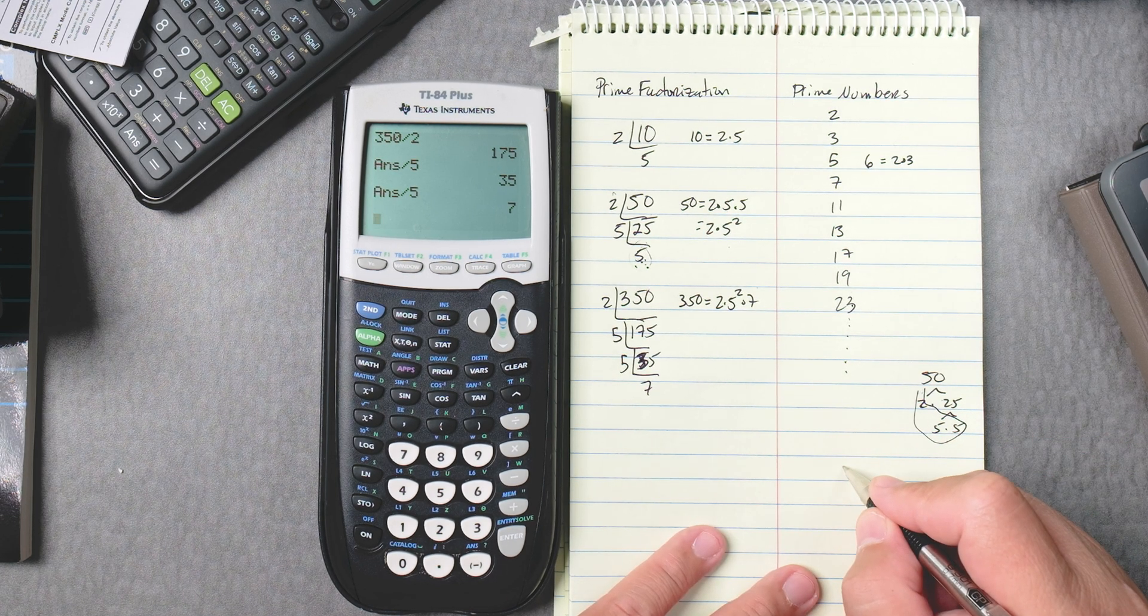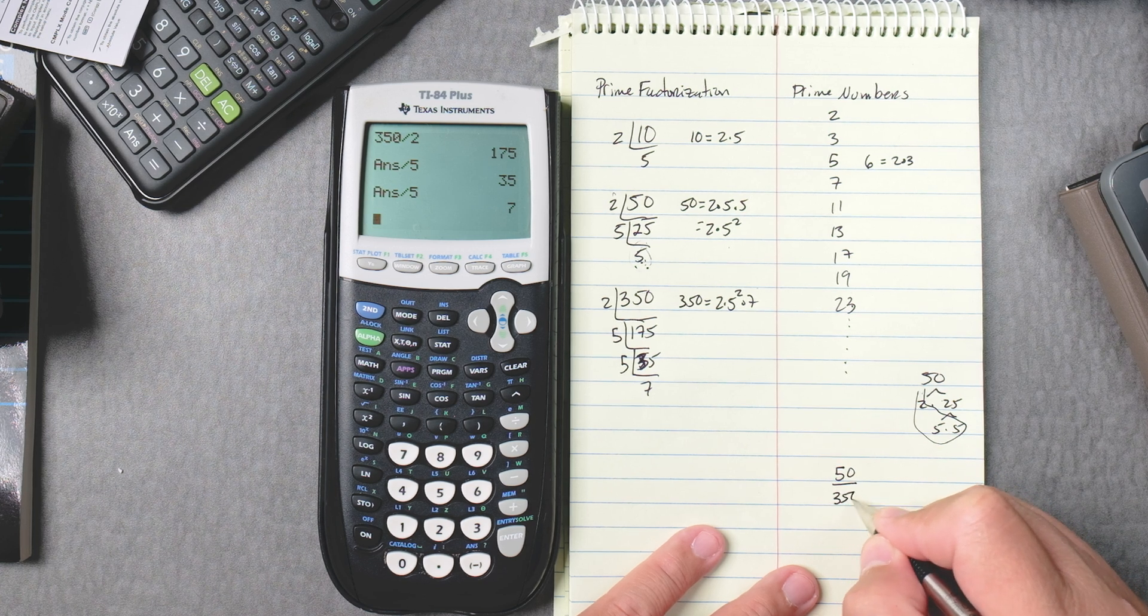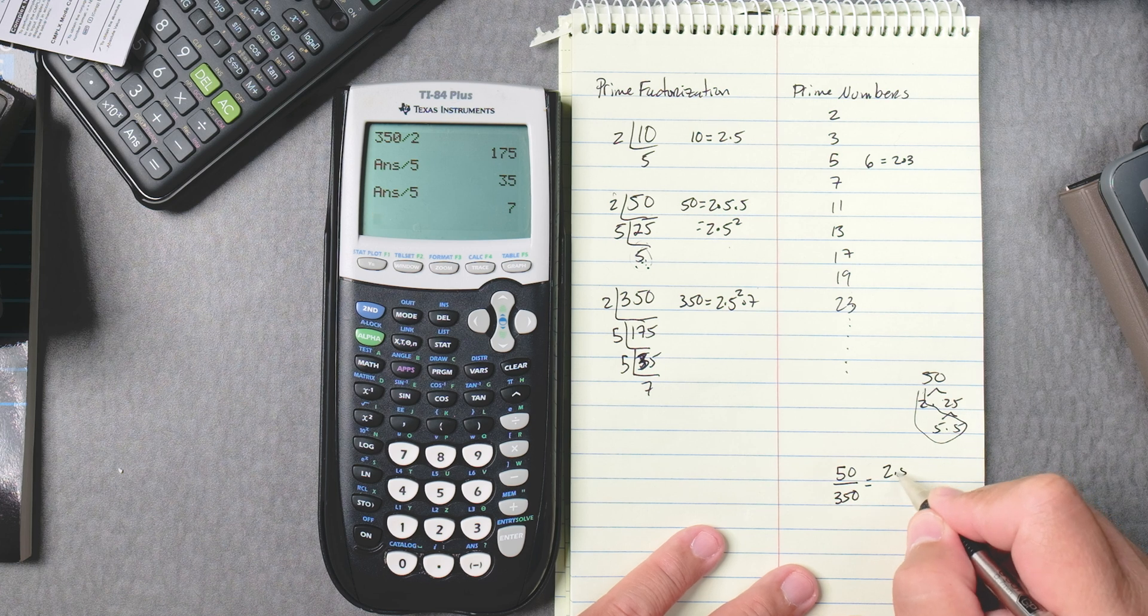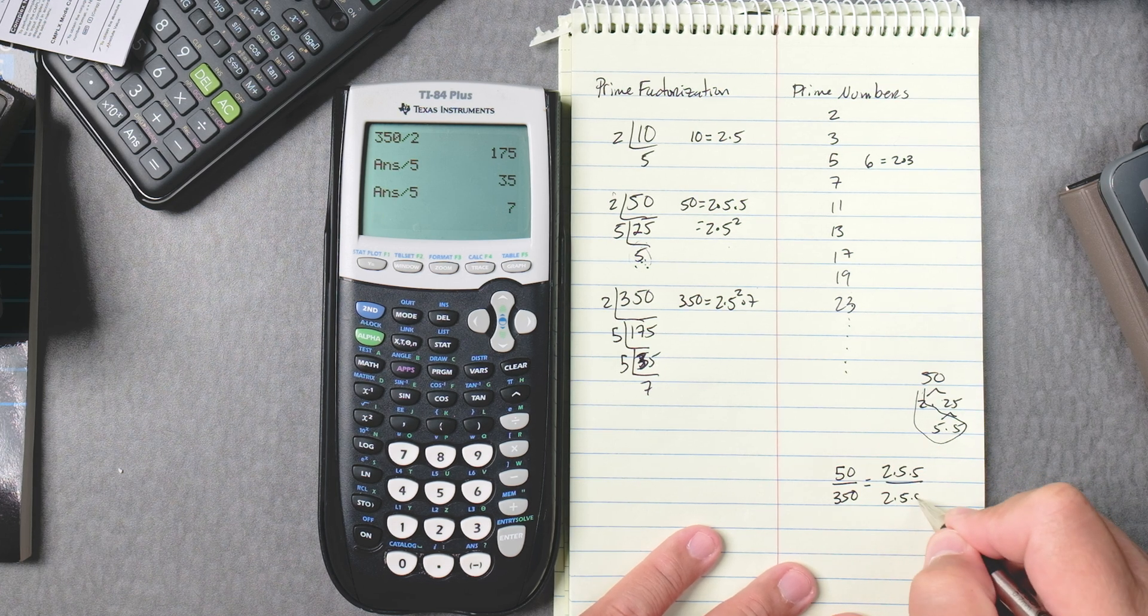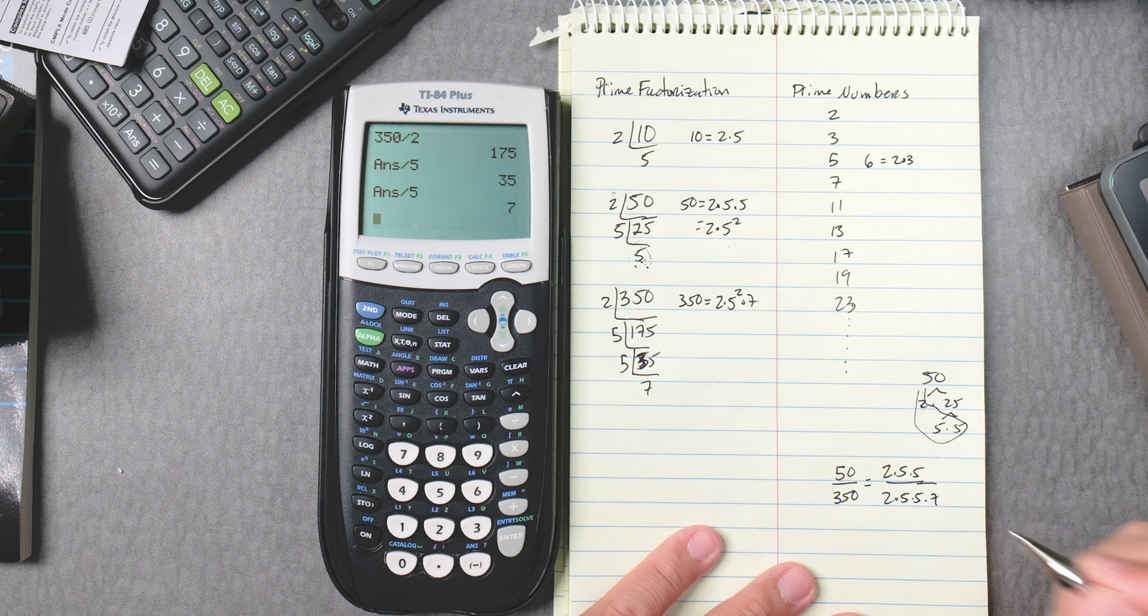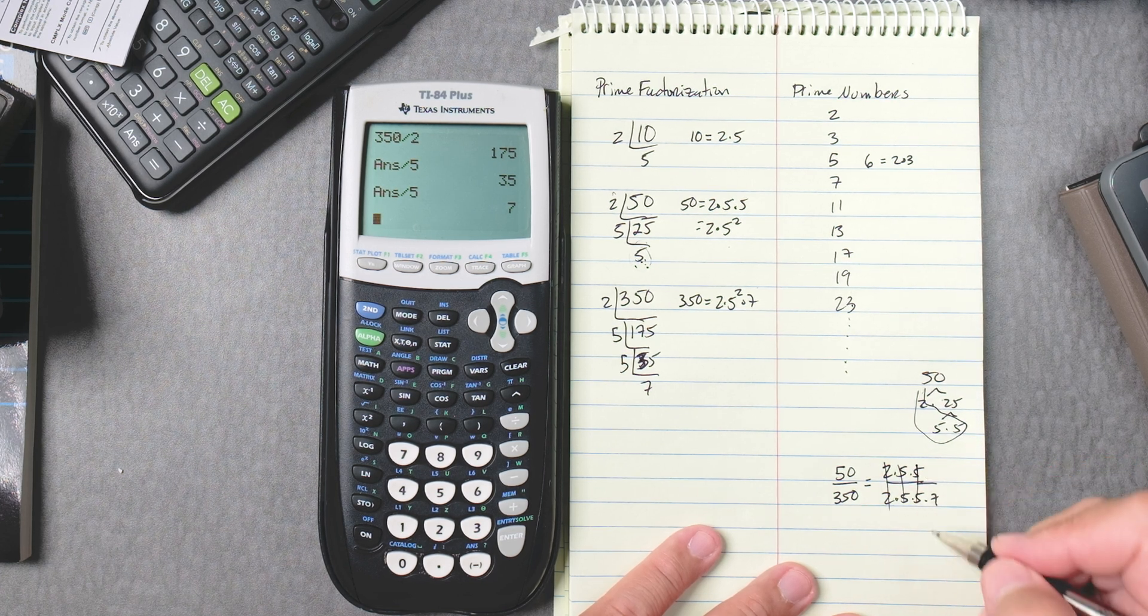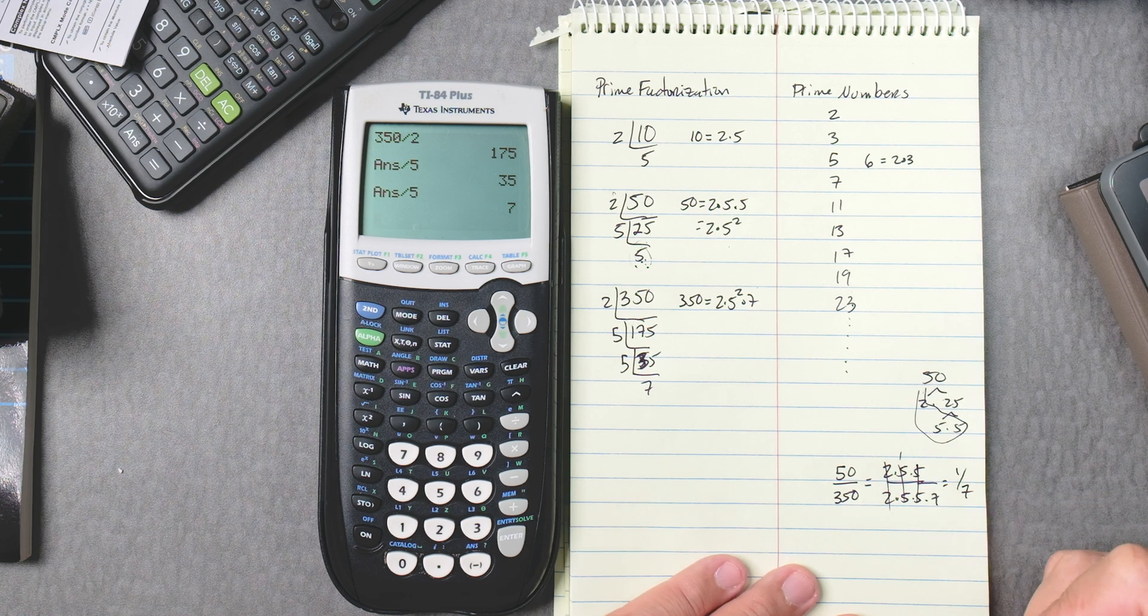What's so great about doing prime factorization is because you can reduce fractions, for example. 50 can be broken down into 2 times 5 times 5. 350 is 2 times 5 times 5 times 7. The 2s go away, the 5s go away, the 5 goes away, that's a 1, so that's 1 over 7. Pretty neat, right?